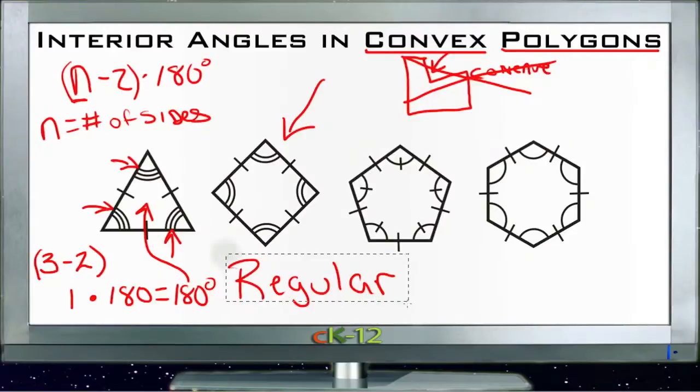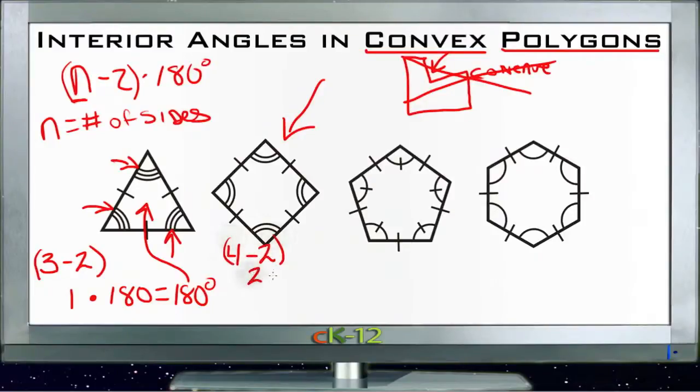If we take a look at a square, the square should have 360 degrees, and a square is four sides, so we take four minus two, and that gives us two times 180 is 360 degrees, which again is what we expected to see.